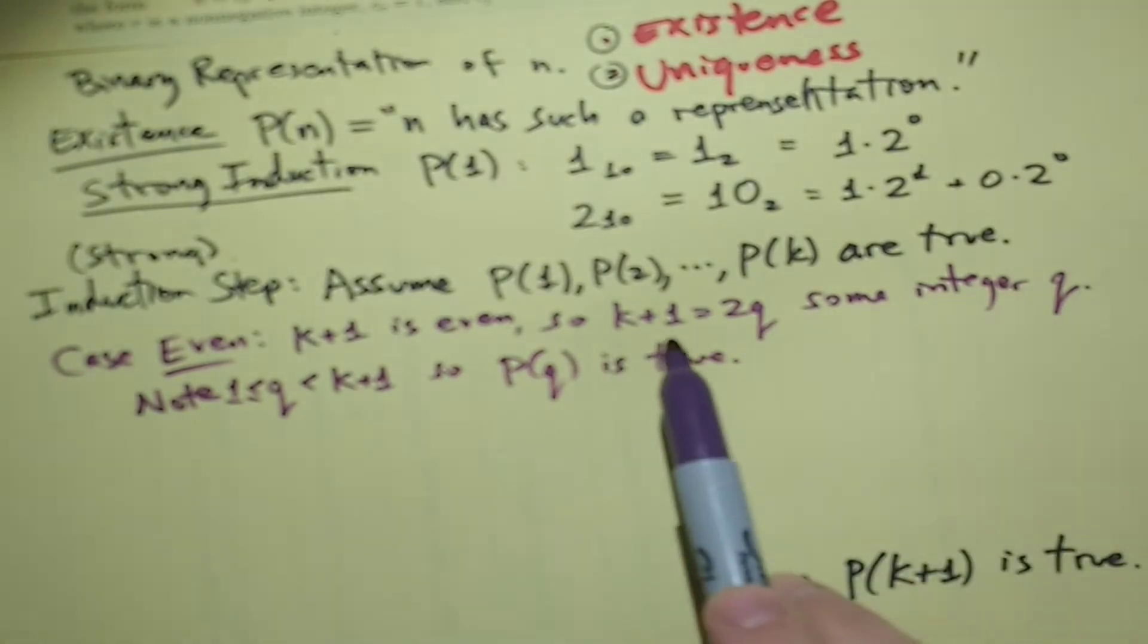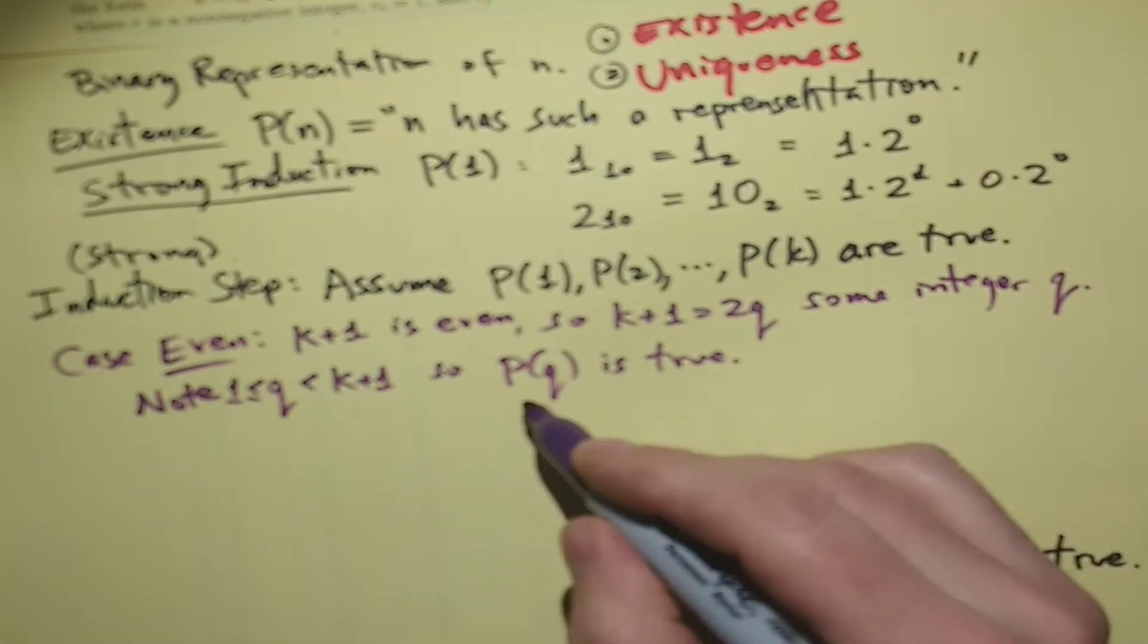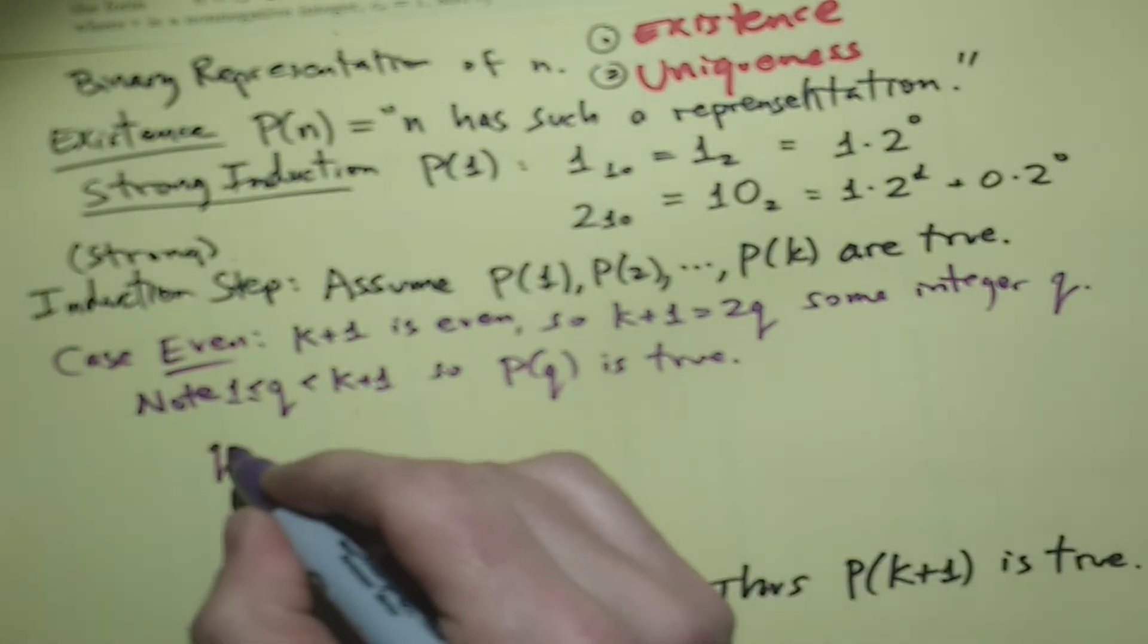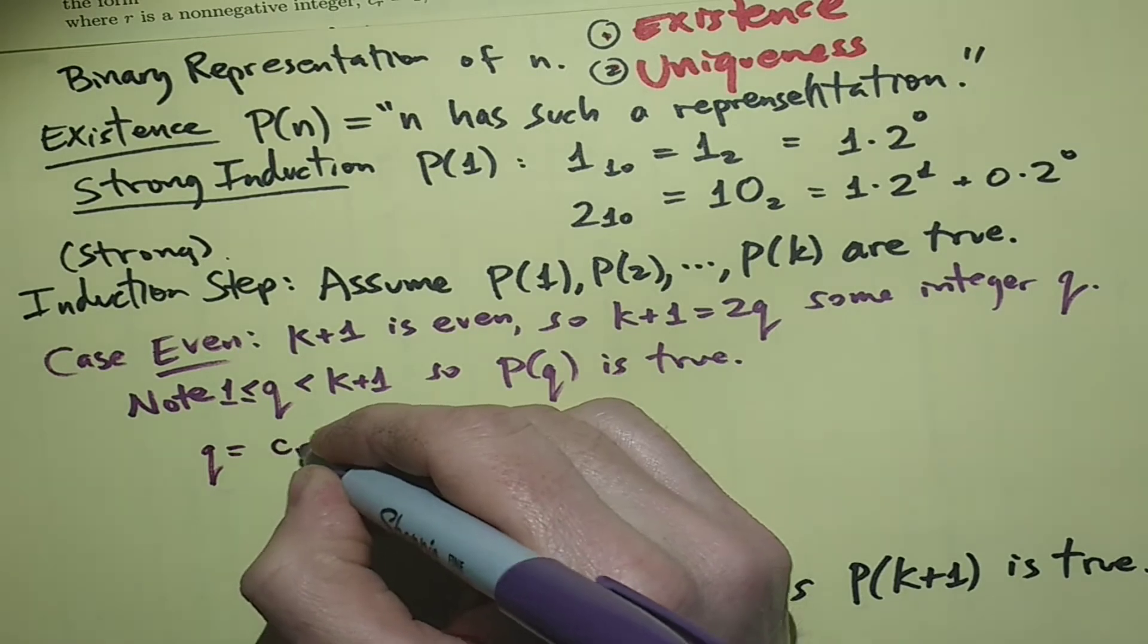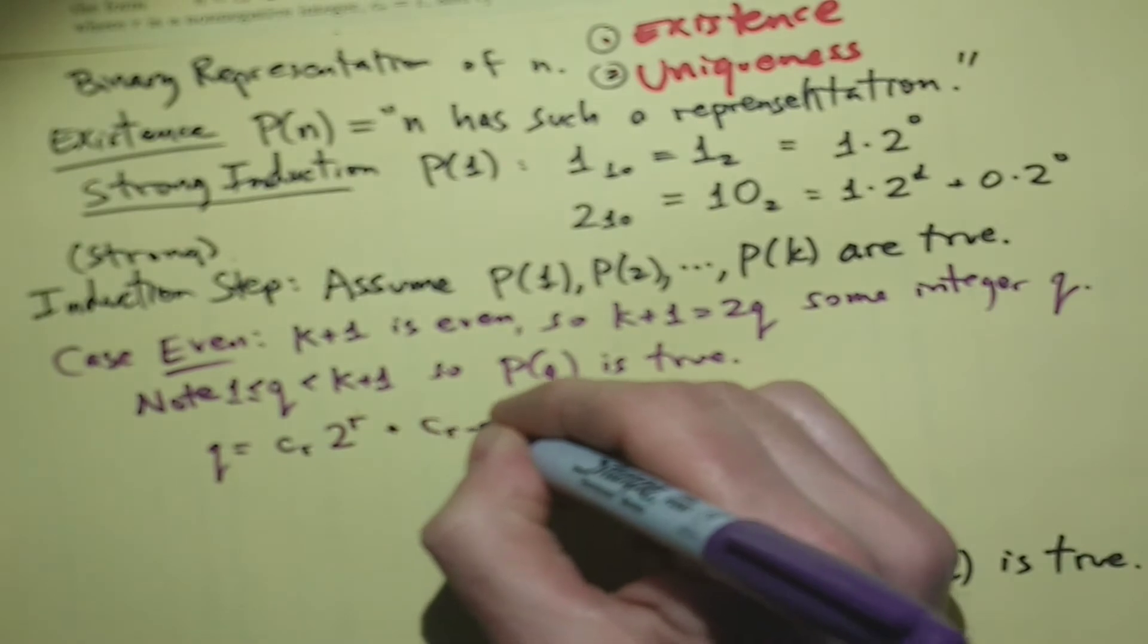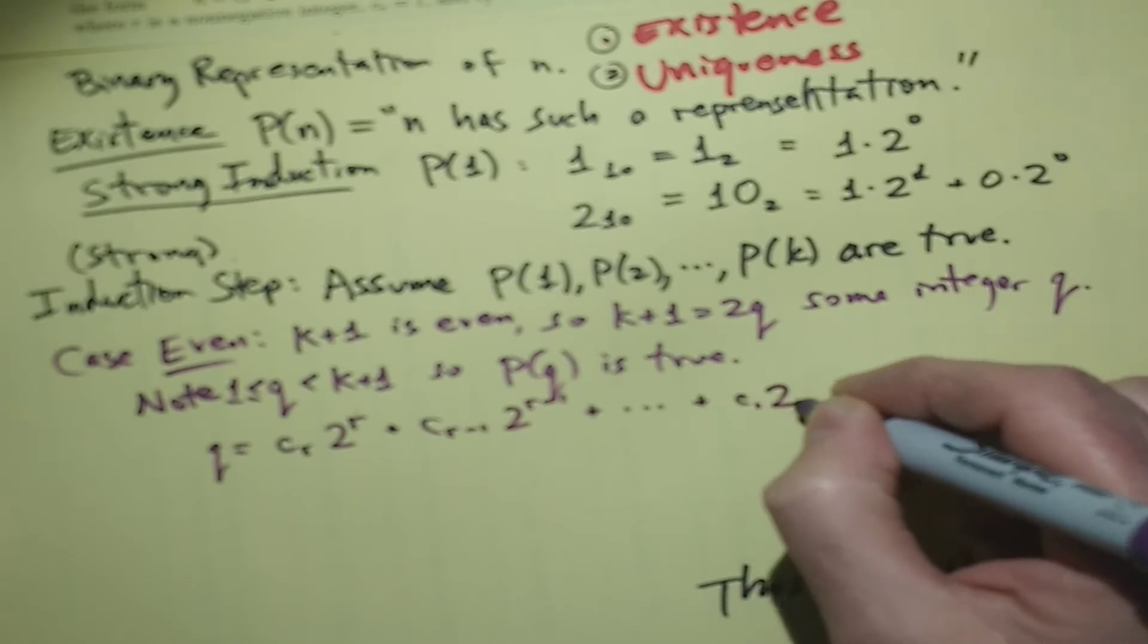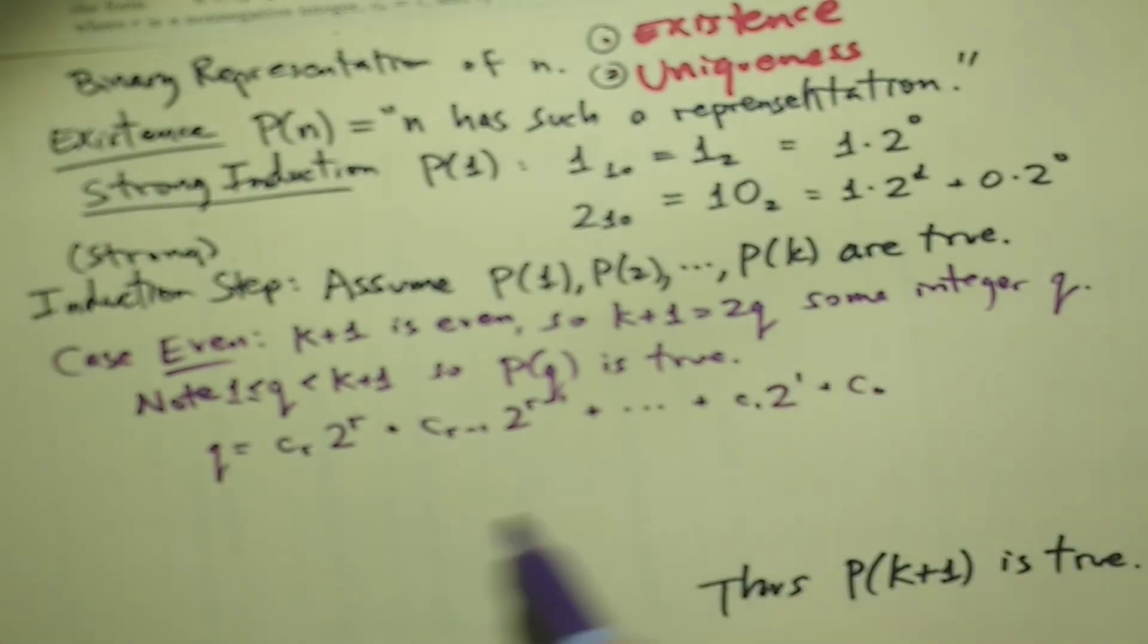Why is that? Well, maybe I could go into more detail but if k+1 is twice q, then q must be less than k+1 and q is also going to be at least 1. So P(q) is true, that means that q does equal cr 2 to the r plus cr minus 1, 2 to the r minus 1, plus all the way down to c1, 2 to the 1, plus c0, for some binary digits cr down to c0 and those are the powers of 2.